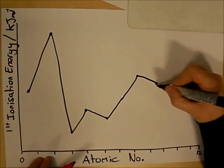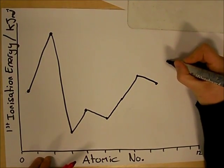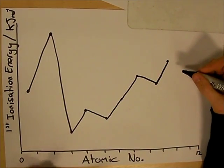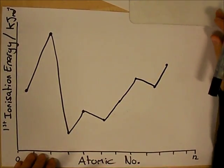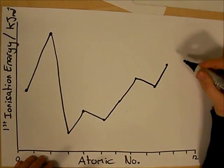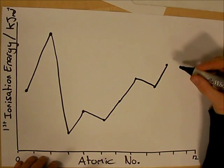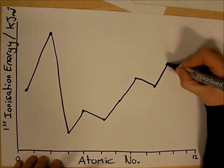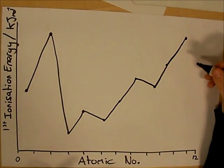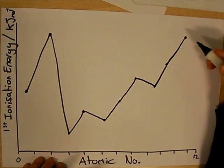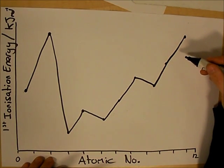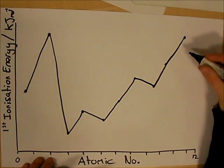Atomic number 9 increases from atomic number 8 again due to increased nuclear charge — more protons in the nucleus means a stronger attraction for the electrons, meaning more energy needs to be used to remove them. Atomic number 10 again has a high first ionisation energy due to increased nuclear charge, with more protons meaning more energy is needed to remove the first electron.